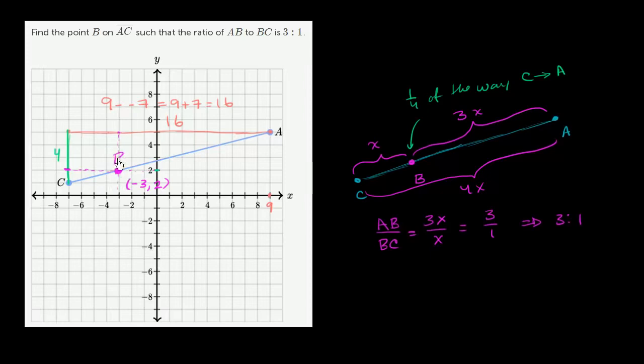So this point right over here is B. It is 1 fourth of the way between C and A. Or another way of thinking about it, the distance between C and B, which we haven't even figured out, we could do that using the distance formula or the Pythagorean theorem. This distance CB is 1 third the distance BA. Or the ratio of AB to BC is 3 to 1.